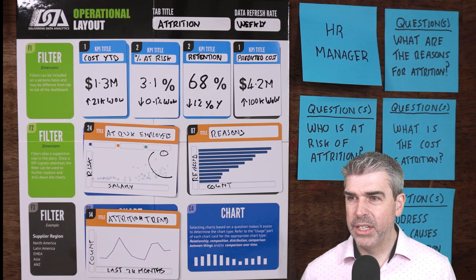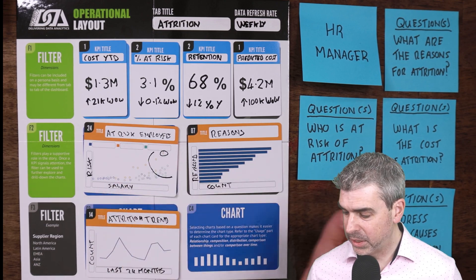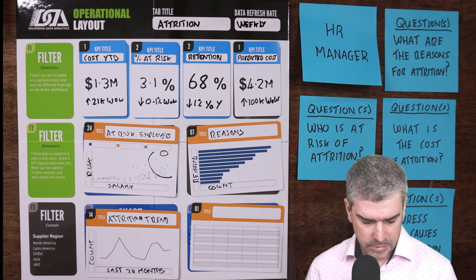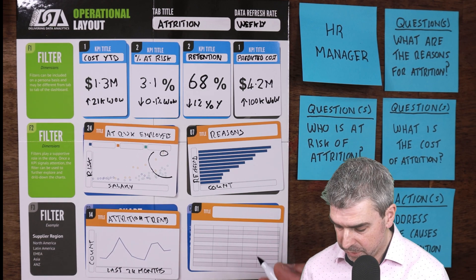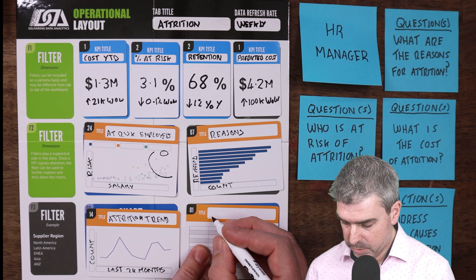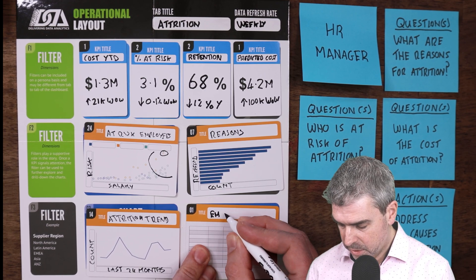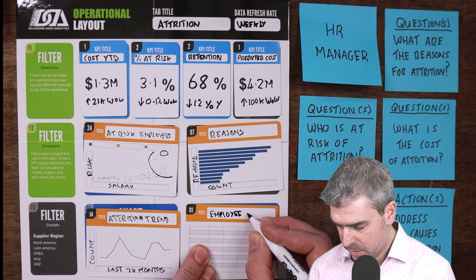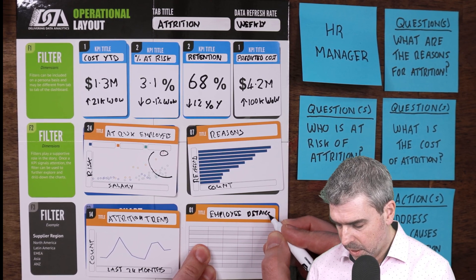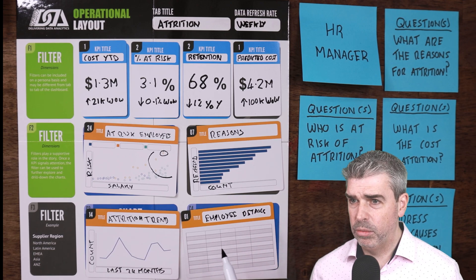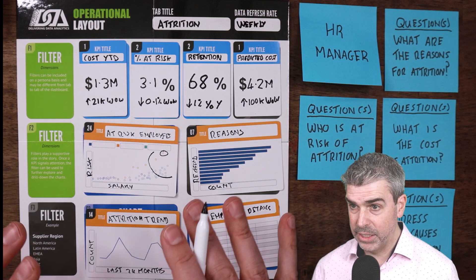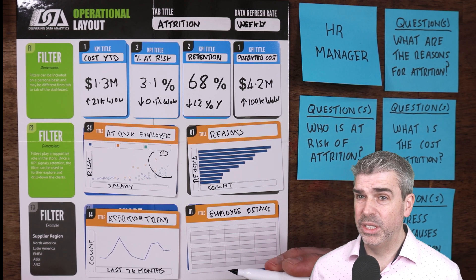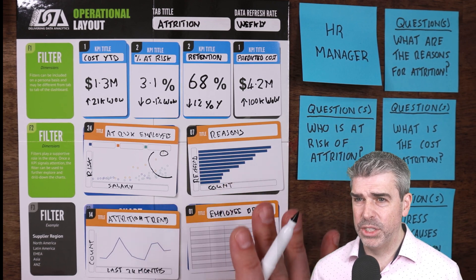Finally, in this type of dashboard where we want to take action and get into the details, it could be useful to have a row-level detail table — one row for each employee that's been selected or filtered on. It could show who the supervisor is, what department they're in, and all the details you might need to have.